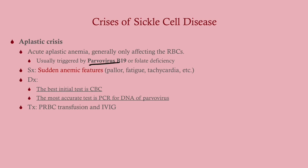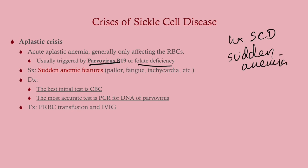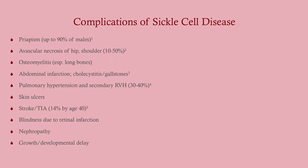Aplastic crisis in the context of sickle cell disease is typically due to parvovirus B19 infection or folate deficiency. Look for patients with sickle cell disease who suddenly develop anemic symptoms — these are patients who were fine and then over 12 to 36 hours become very anemic. Best initial test is a CBC to find the anemia; also get a PCR looking for parvovirus. Treatment is red blood cell transfusion for the anemia, and you can give IVIG.